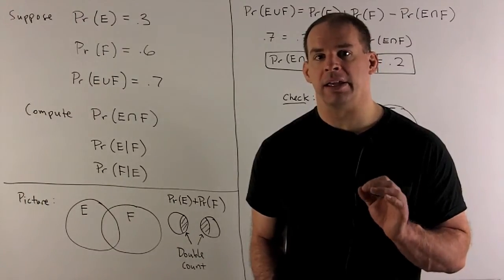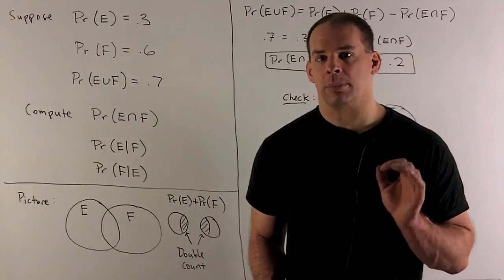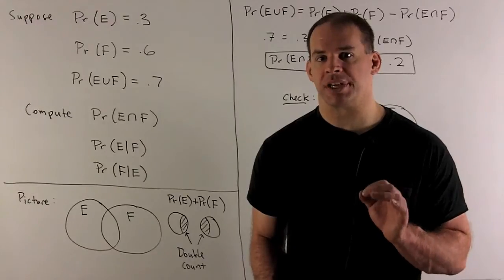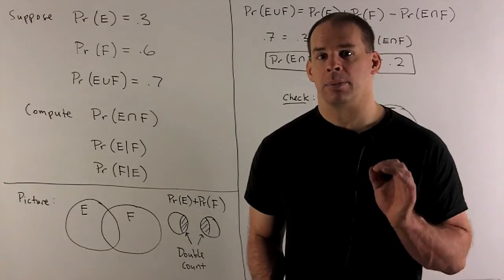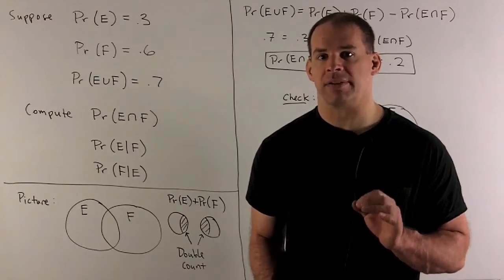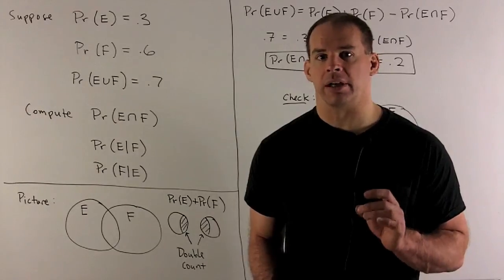Suppose the probability of event E is 0.3, the probability of event F is 0.6, and the probability of the union is 0.7. Compute three items.